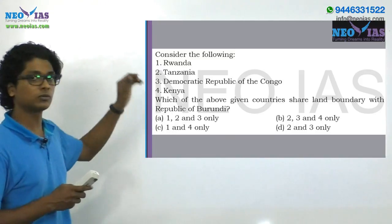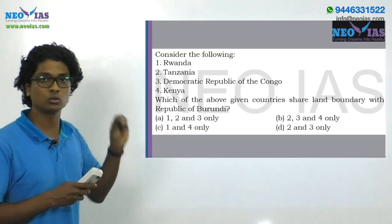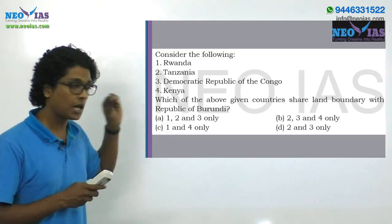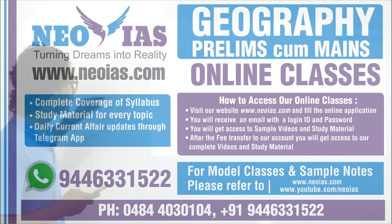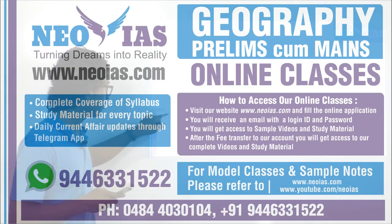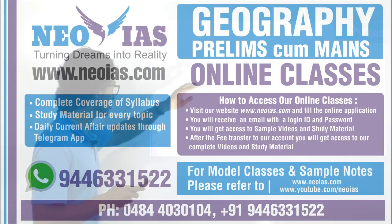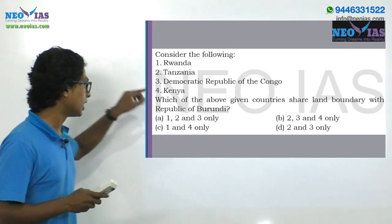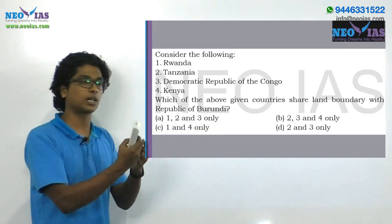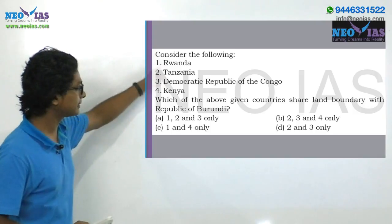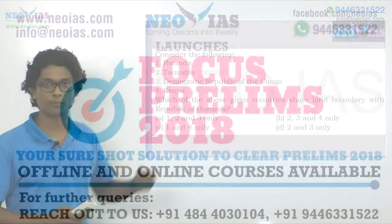In that perspective, the Republic of Burundi is one of the probable areas to expect for the 2017 prelims examination. The answer comes out as option A, which is 1, 2, and 3. Kenya is not sharing a land boundary with the Republic of Burundi. It is a landlocked country between Rwanda, Tanzania, and the Democratic Republic of Congo.